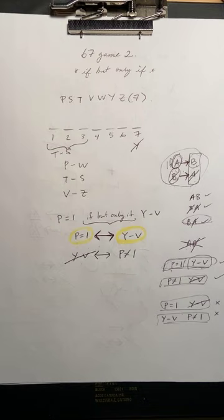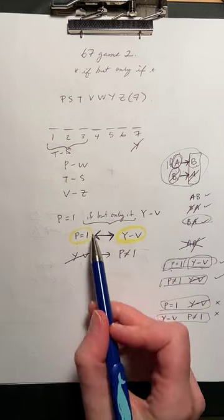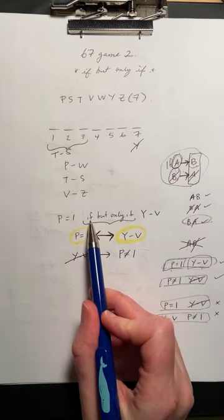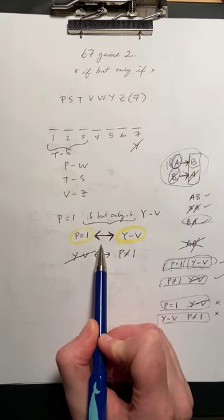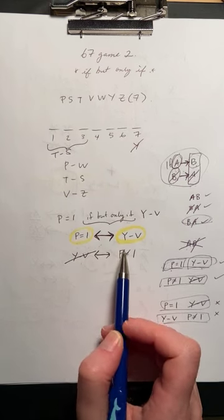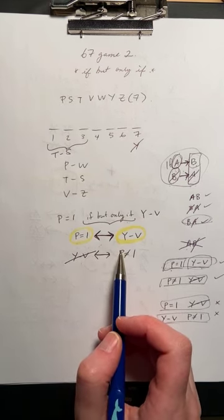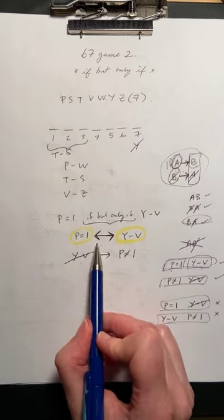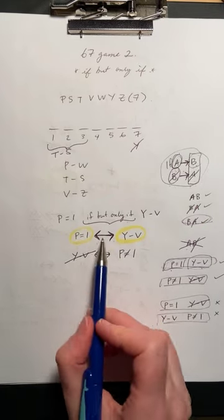So if you want the simplest kind of shortcut way of looking at it, then you treat if but only if as a double arrow and you follow the rule that you follow the direction of the arrow and you don't go backwards on the arrow unless you're allowed to with a double arrow.